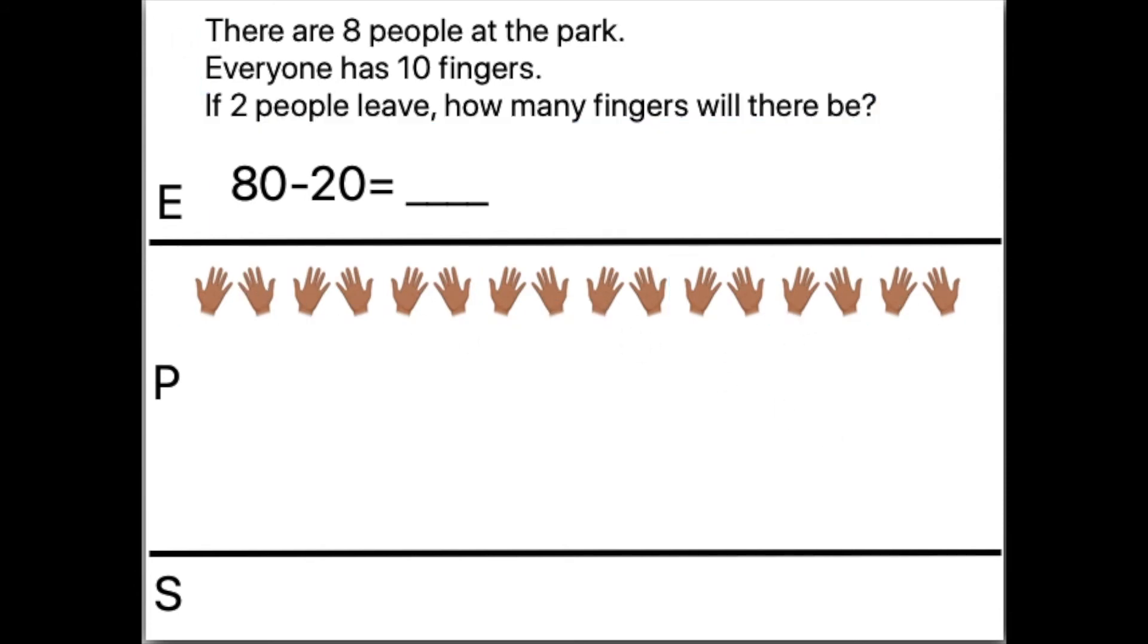Now if two people leave, I'm gonna subtract two. I can take away two of these people. One, two. Now we can count by tens to figure out how many fingers there are. 10, 20, 30, 40, 50, 60.